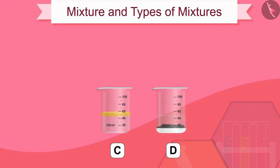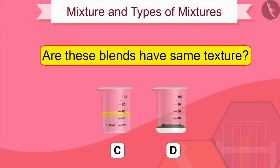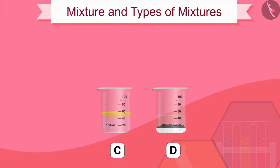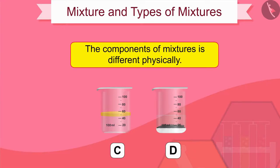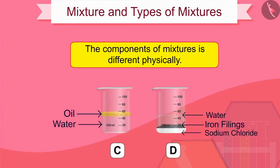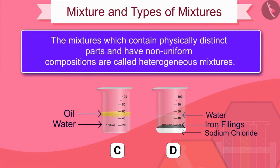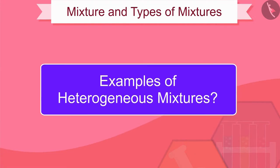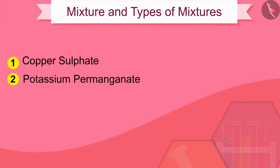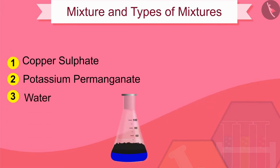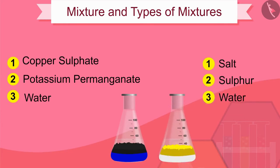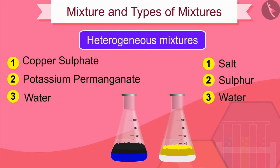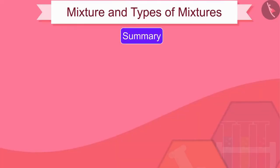Now look at the mixtures of beakers C and D. Are these blends of the same texture? The components obtained in beakers C and D are physically different. Mixtures which contain physically distinct parts and have non-uniform compositions are called heterogeneous mixtures. Examples include copper sulfate and potassium permanganate in water, and salt and sulfur in water.